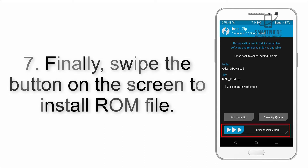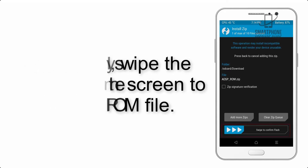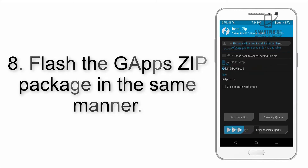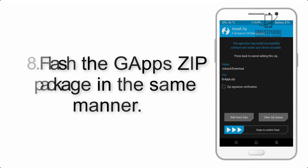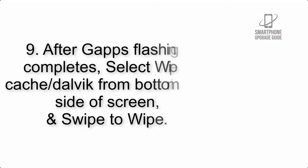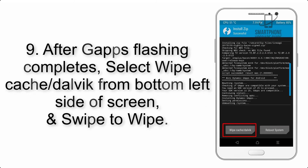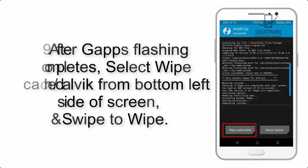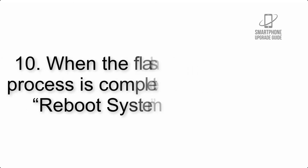Step 7: Finally, swipe the button on the screen to install the ROM file. Step 8: Flash the GApps zip package in the same manner.